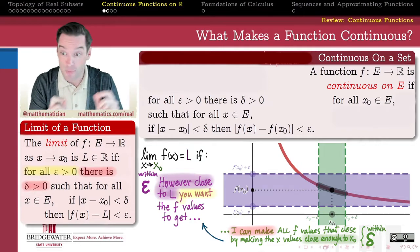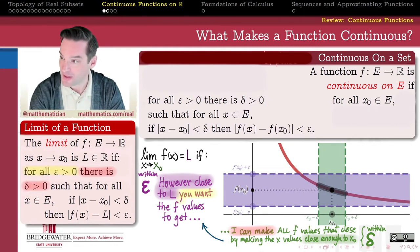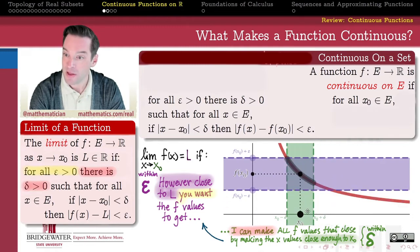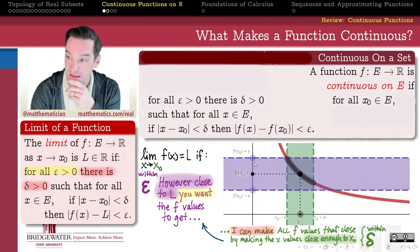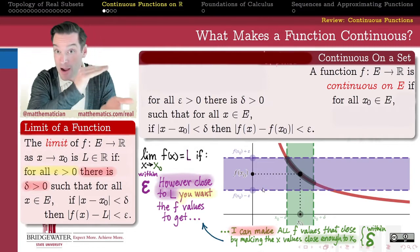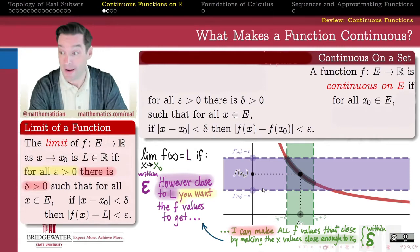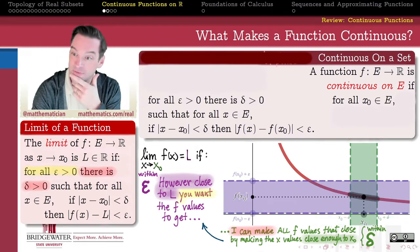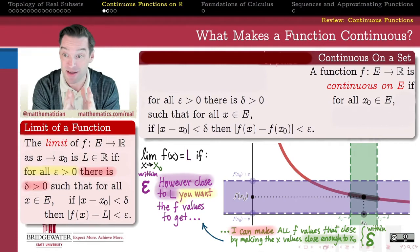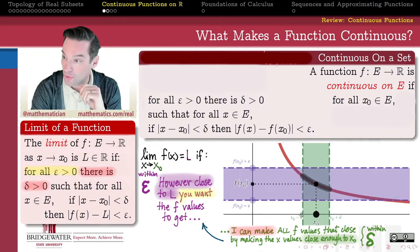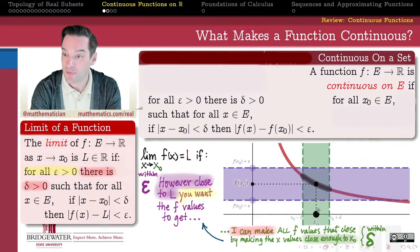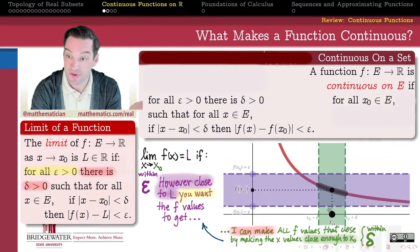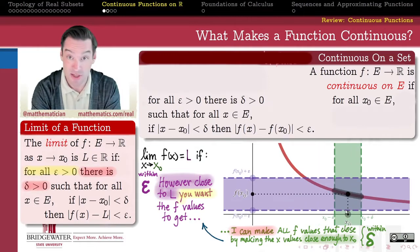Different points in the domain can have different relationships between epsilon and delta. For example, sliding x-naught along the graph, you can see that in one part of the graph the purple strip of radius epsilon is about as tall as the green strip is wide — epsilon and delta are roughly comparable. But further out, the deltas get narrower. We can have different epsilon-delta relationships at different points, even if the function is continuous on the entire set.